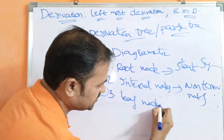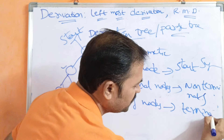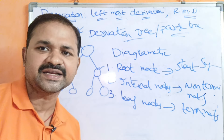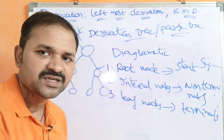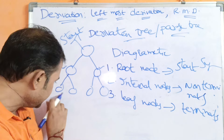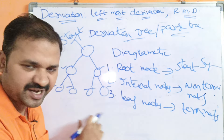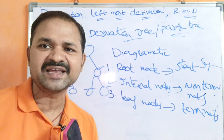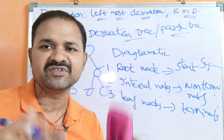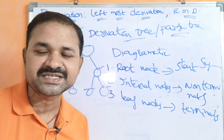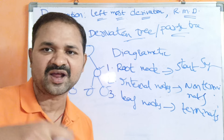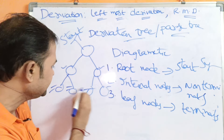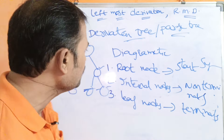The third rule is: leaf nodes are terminal nodes. Leaf nodes are nodes with no children. In order to represent leaf nodes, we use terminals. Terminals are represented with the help of lowercase letters, digits, or symbols such as left parenthesis, right parenthesis, plus, minus, star, and so on. By following these three rules, we can construct parse trees.